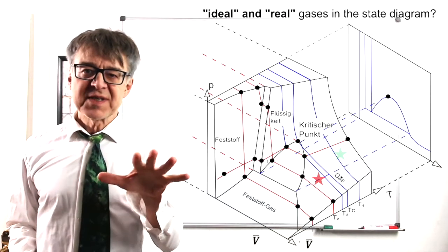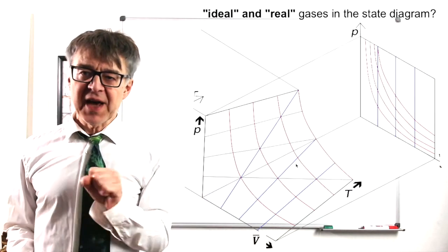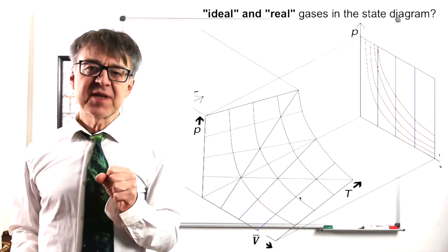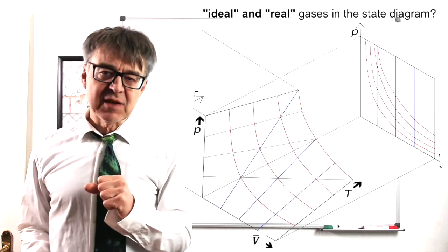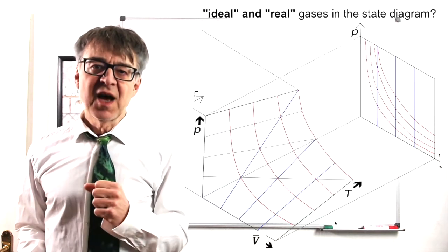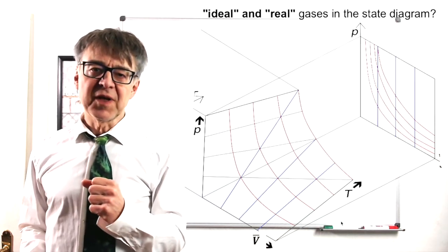Back to ideal, we zoom out the area of the ideal gas. This area is mathematically very well described by the ideal gas law. P equals RT over V bar.